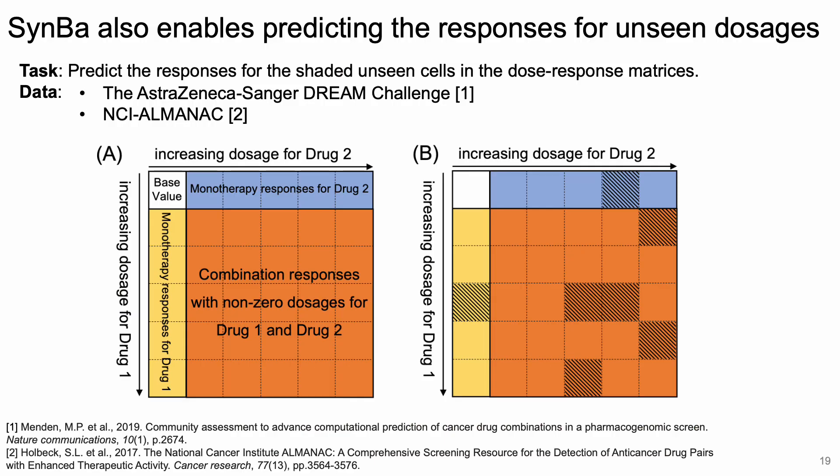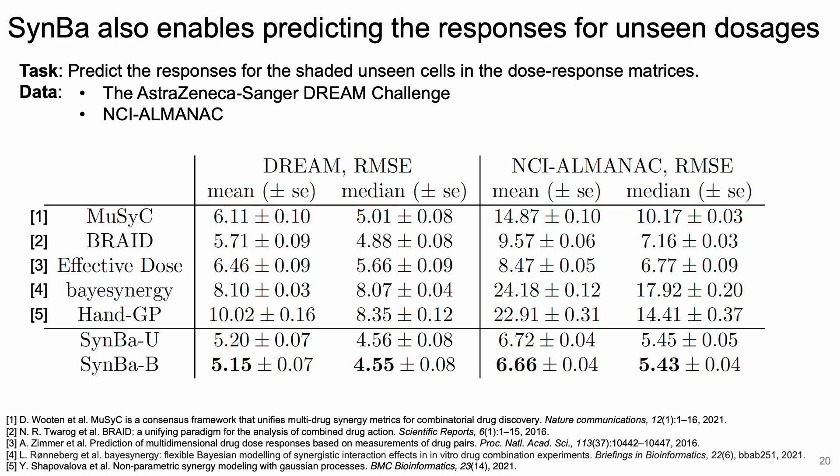In addition, SIMBA can also accurately predict responses for unseen dosages. The task is to predict responses for shaded unseen cells in the matrices. While this is not the main goal of SIMBA, it is a useful test to show that SIMBA has not sacrificed prediction accuracy for uncertainty estimation. SIMBA has outperformed state-of-the-art deterministic and probabilistic methods in terms of test root mean squared error and test log likelihood on both the DREAM and the NCI Almanac datasets.